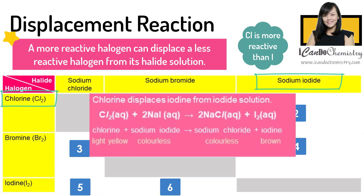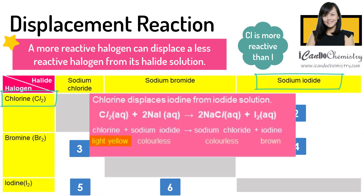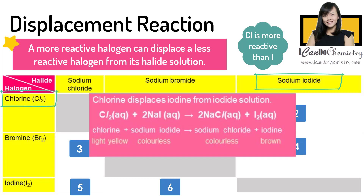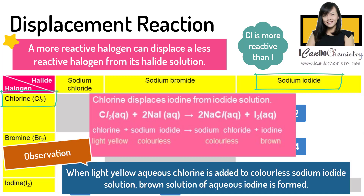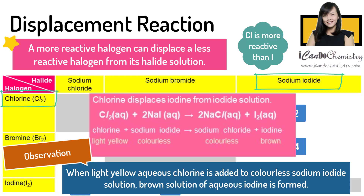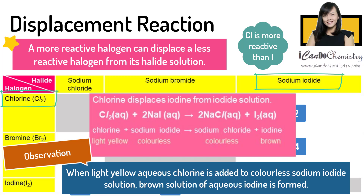What will be observed? Aqueous chlorine is light yellow, both halide solutions are colourless, and aqueous iodine is brown. Hence in this reaction, when light yellow aqueous chlorine is added to colourless sodium iodide solution, a brown solution of aqueous iodine is formed.